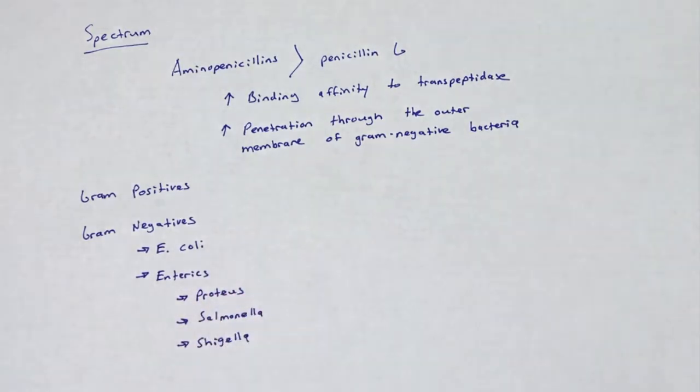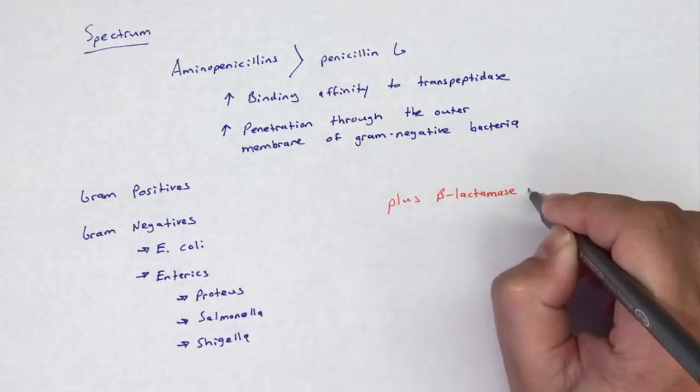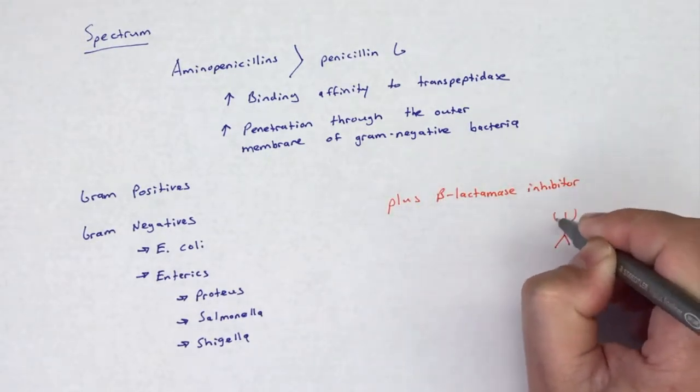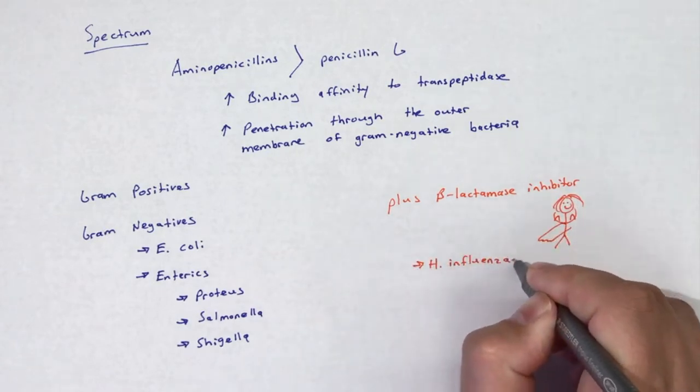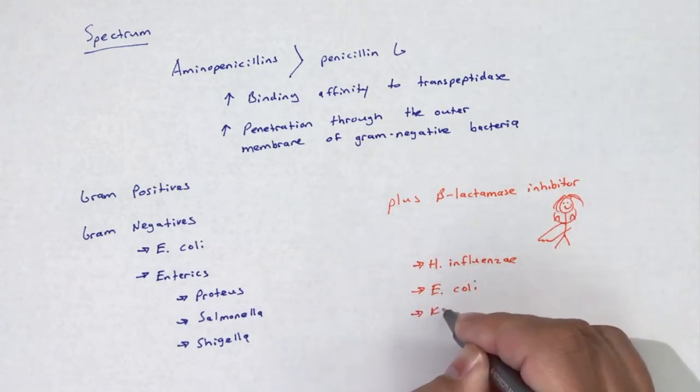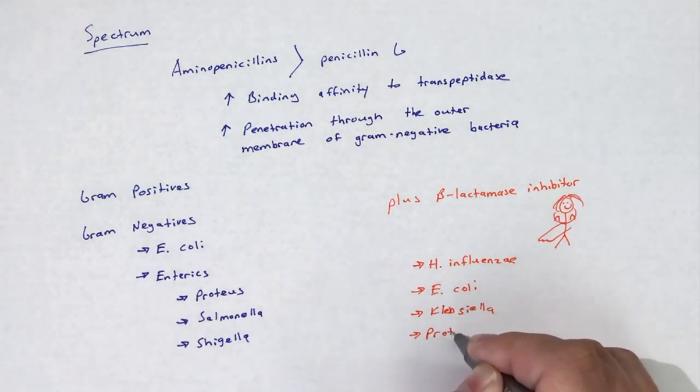Combination with beta-lactamase inhibitors extends the spectrum of aminopenicillins to include beta-lactamase-producing bacteria. Beta-lactamase inhibitors improve aminopenicillin coverage of H. influenzae, E. coli, Klebsiella species, Proteus species, and B. fragilis.